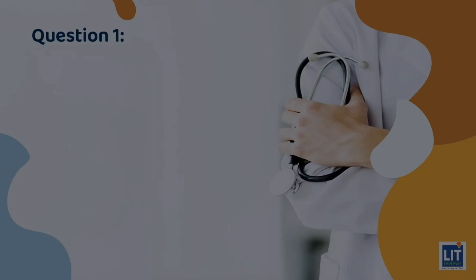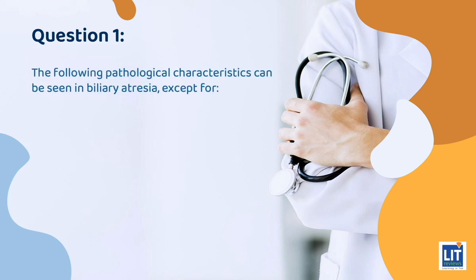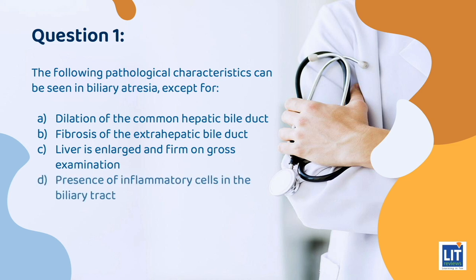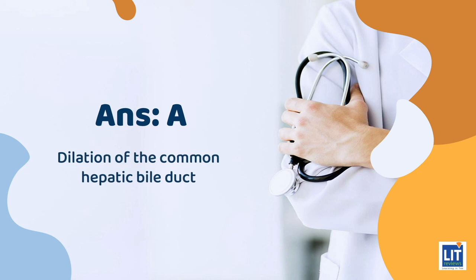Quiz time. Question 1: The following pathological characteristics can be seen in biliary atresia except: A. Dilation of the common hepatic bile duct. B. Fibrosis of the extra-hepatic bile duct. C. Liver is enlarged and firm on gross examination. D. Presence of inflammatory cells in the biliary tracts. E. Signs of liver sclerosis. The answer is A: dilation of the common hepatic bile duct.